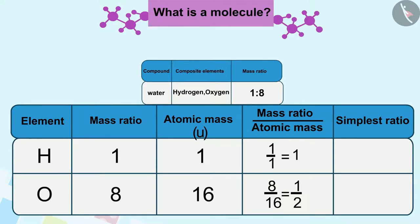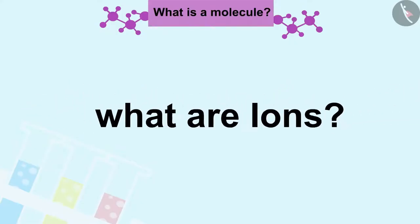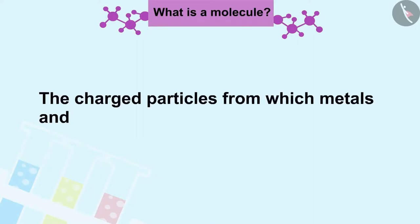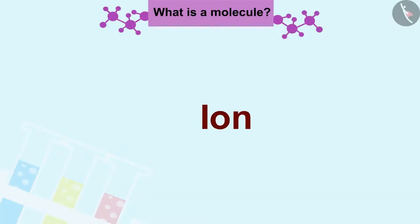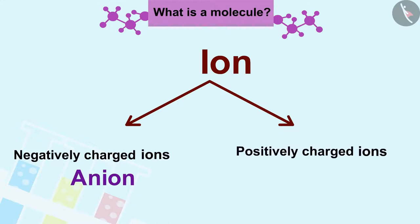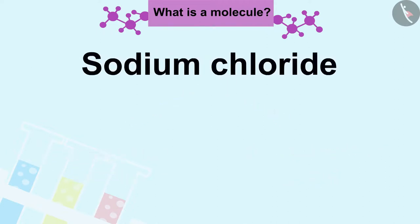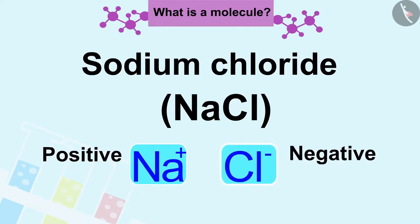Let us see what are ions. The charged particles from which metals and non-metals are made are called ions. Ions are divided into two types based on the charge on them. The negatively charged ions are called anions and the positively charged ions are called cations. For example, sodium chloride (NaCl) contains positive sodium ion (Na+) and negative chloride ion (Cl-) as constituent particles.